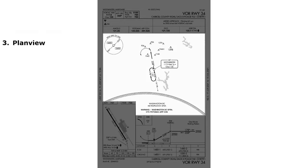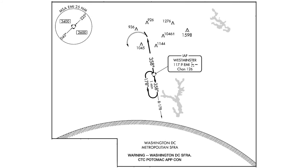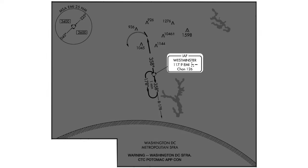Moving on from the briefing strip is the third section: the plan view. This is a top-down, bird's eye view of the instrument approach. First, the NAVAID is indicated — this is the primary NAVAID for the approach — giving similar information to what you might see on a sectional chart: the facility name (Westminster VOR), the identifier EMI, the frequency 117.9, the Morse identifier, and channel 126 for military use. A couple of approach segments are listed here. The first is the hold in lieu of procedure turn, depicted as a solid-line racetrack. If it were dotted or dashed, it would be a traditional hold.